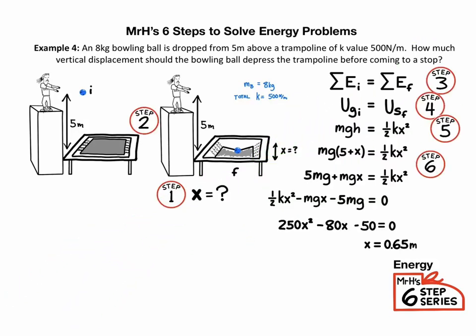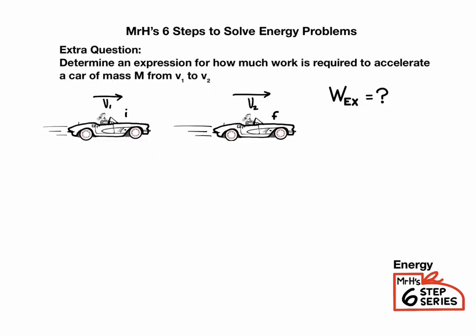If you were able to recognize that the height includes not only the 5 meters but also the distance x, then you could have correctly substituted 5 plus x for h, and you would have ended up getting x equals 0.65. Without that substitution we would end up getting a smaller number for x. So hopefully we were very careful when identifying the coordinates for height. Give this one extra question a try.